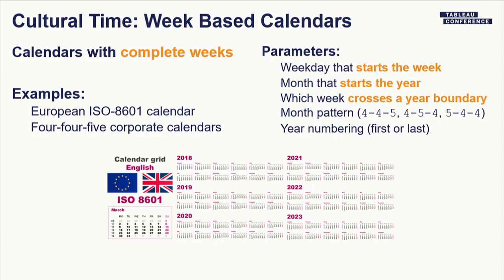One important topic is week-based calendars. Customers commonly use these to deal with the problem that there's almost — but not quite — the right number of weeks in a year. The European ISO 8601 calendar is one example; there are also 4-4-5 and 4-5-4 sales or corporate calendars. It turns out you can describe this whole family of calendars with just a few variables. This is one of my first findings I'm hoping to push into the product: instead of just choosing Gregorian or ISO, we could support all these week-based calendars.